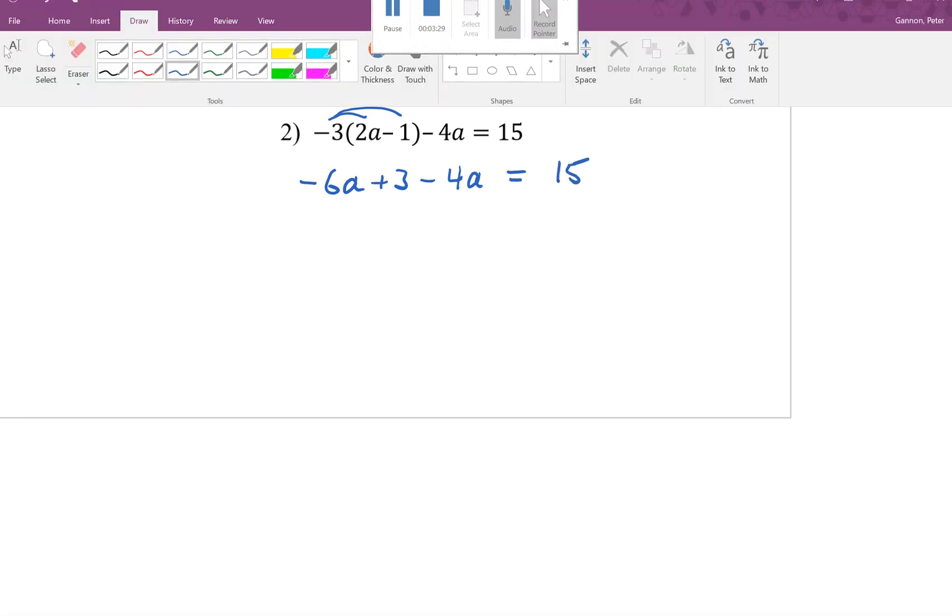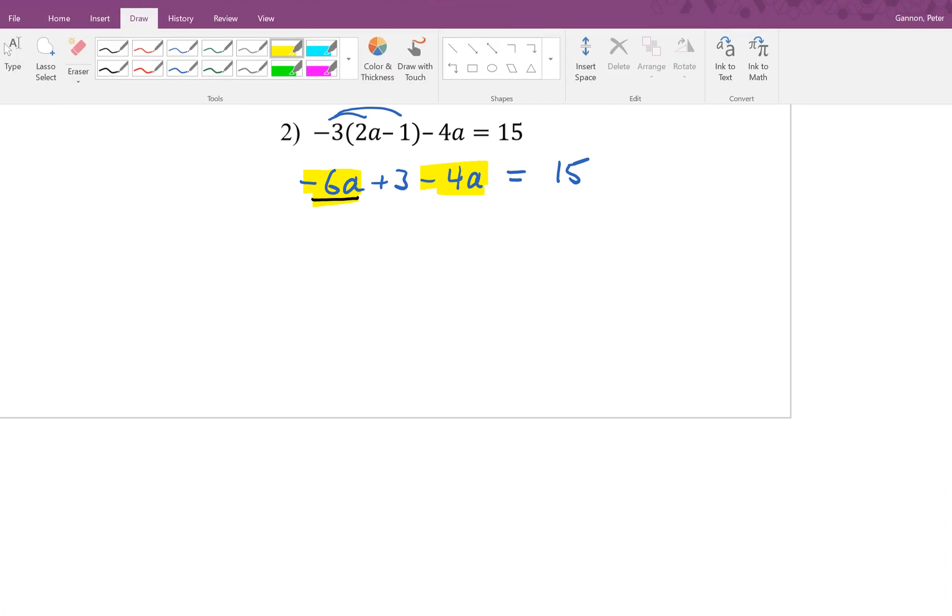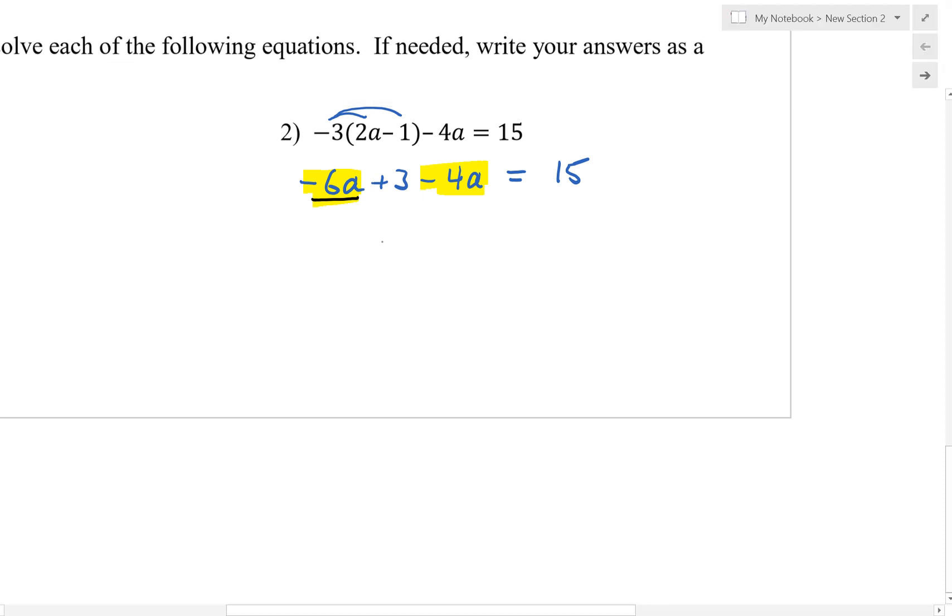We're not quite done because we need to combine like terms. We have negative 6a and negative 4a that we can combine.